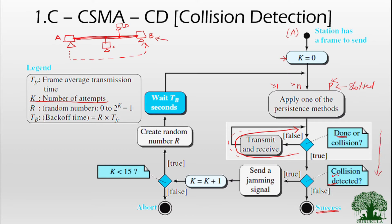Now let us see what happens if a collision is detected. If any frame transmitted by station A encounters a collision, station A will send a special type of signal called a jamming signal. This jamming signal is sent on the network to intimate other stations — not only the transmitter and receiver, but all other stations present in the network — so that they will not send or receive any frames using that network. That is the purpose of sending a jamming signal.